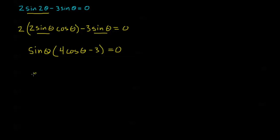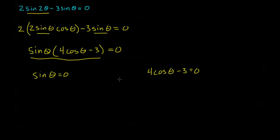Now I have a product equal to 0, so I split into: when sine theta equals 0, and when 4 cosine theta minus 3 equals 0. Whenever either factor equals 0, the product is 0. Sine theta equals 0 when theta equals 0 or π, or any coterminal increments — so I can write that as kπ. For the other equation, 4 cosine theta minus 3 equals 0 means cosine theta equals 3/4.